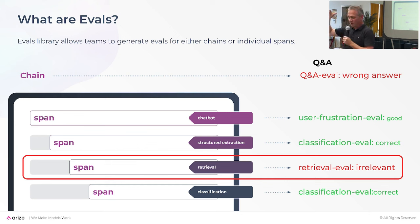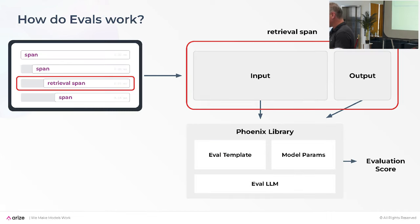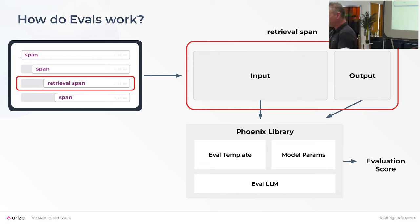Evals you might want to apply across different spans — you might have an overall question-and-answer eval, evals for retrieval. Your evaluations need to occur at different spots within your system to be able to troubleshoot where your problems are. The library from Phoenix is designed to run these at a span level and apply them both in pre-production and production. These are LLM evals — we use another LLM to evaluate your LLM in production. It's a very simple, lightweight library designed to build trust, ease of use, and movement between production and testing.